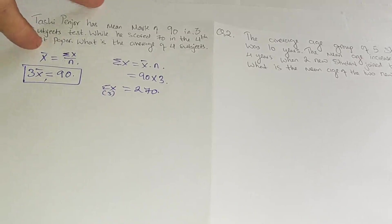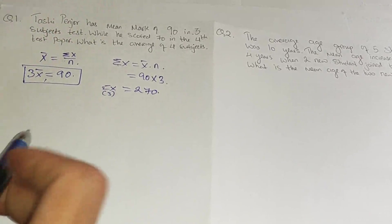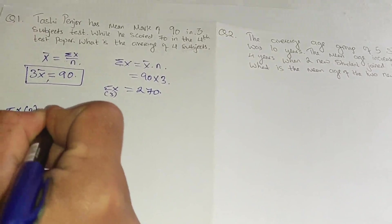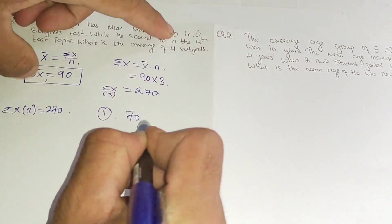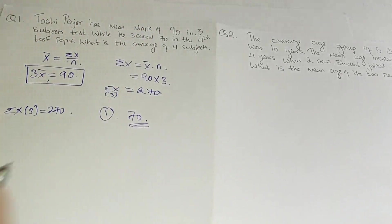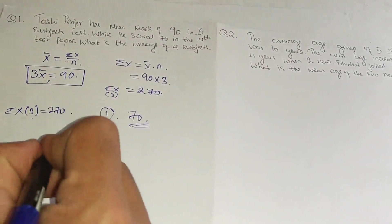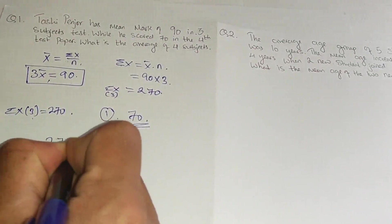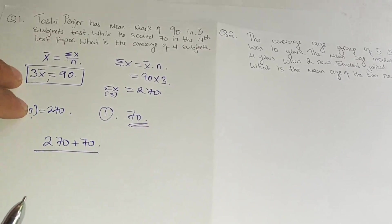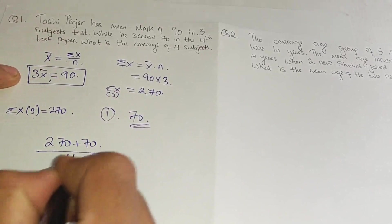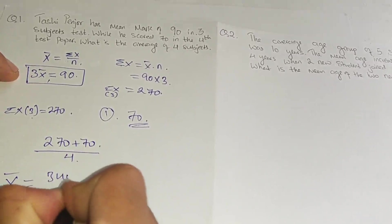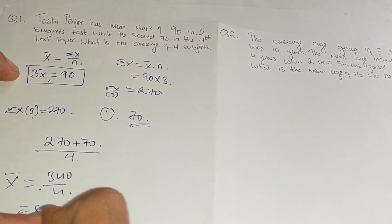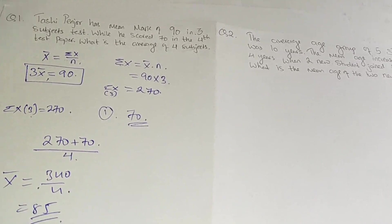Sigma X for 3 subjects is 270. The fourth subject score is 70. So the average for 4 subjects = (270 + 70) / (3 + 1) = 340 / 4 = 85. So the mean average mark for 4 subjects is 85.